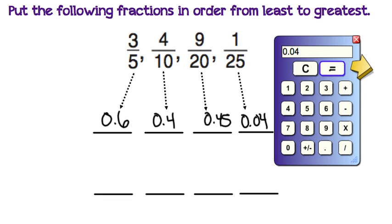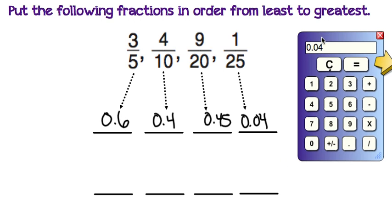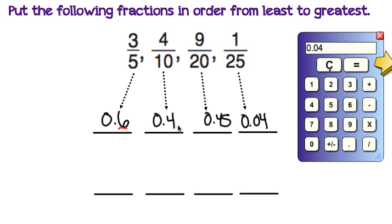When ordering decimals, it's really important to go place value by place value. So you're going to look at the tenths place only first. I'm going to underline the tenths place in each of these numbers. We have a 6, a 4, a 4, and a 0. Looking at the underlined numbers, which number is the smallest? The smallest number is the 0. So 0.04, or 1 twenty-fifth, is going to be our smallest fraction.